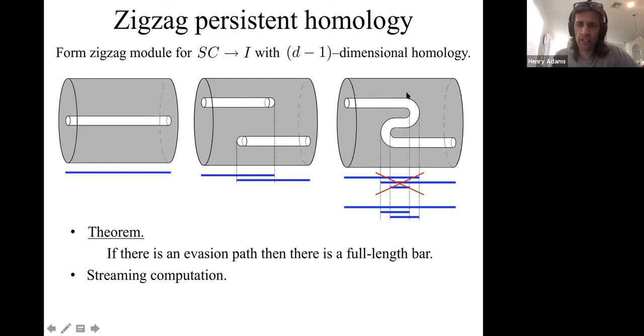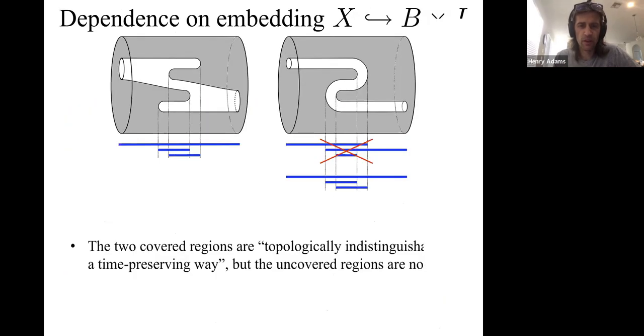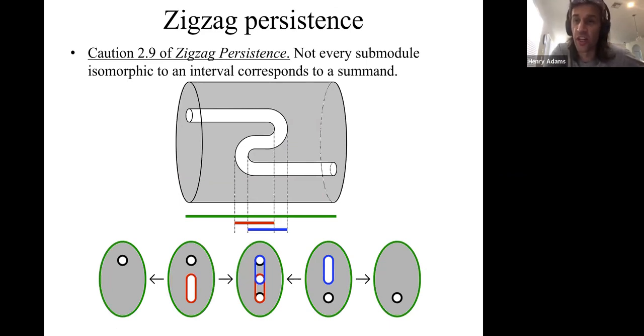I owe you two explanations for these counterintuitive bars. One explanation will be next time. But another explanation is just to show you generators for these bars. This long green bar is generated by the loop in green, which maps to itself consistently in all these slices. The short red bar corresponds to this loop, which in some sense wraps around two holes. And then the short blue bar corresponds to this blue loop, which in some sense wraps around two holes right there. This is just one explanation for these counterintuitive bars, and I'll give you another one in the following video.